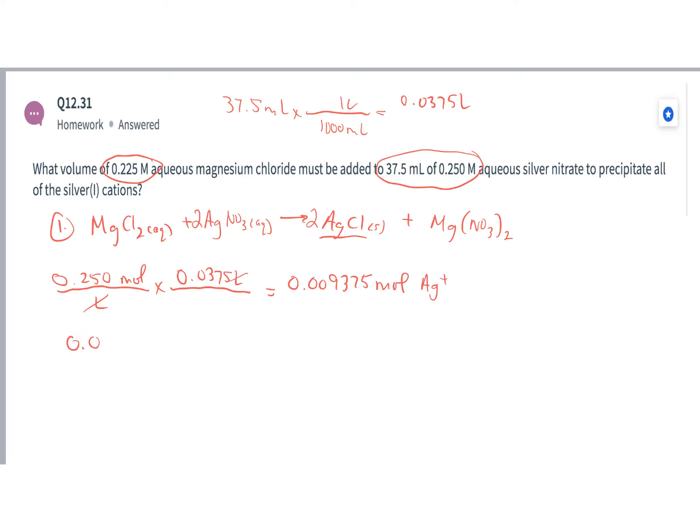Well, I know I've got 0.009375 moles of silver. And if I look at the balanced equation, for every 1 mole of magnesium chloride,